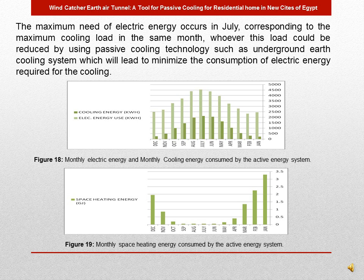The maximum need for electric energy occurs in June and July, corresponding to maximum cooling load. This load can be reduced by using passive techniques. Electric energy use increases to its peak in July then decreases. Maximum space heating energy is consumed in January, when heating energy demand for space heating and hot water is at its highest.